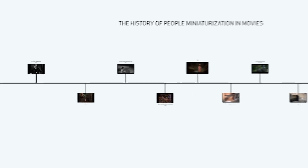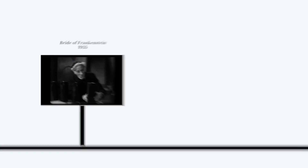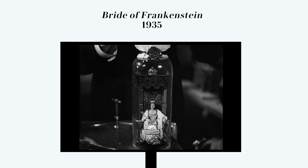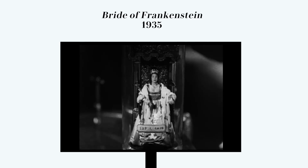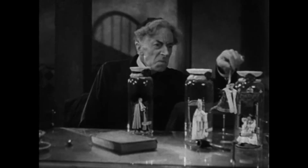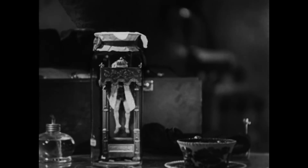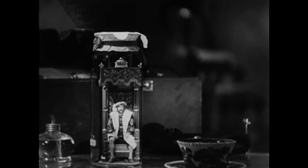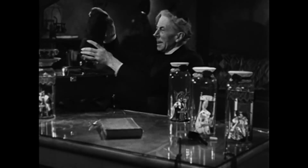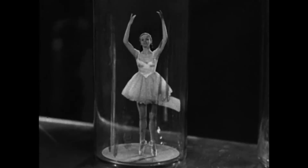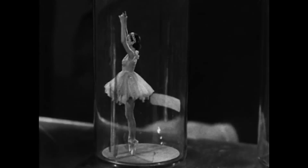One of the first primary uses of visual effects to shrink people was in the movie The Bride of Frankenstein in 1935. In order to blend the big people and the small people together, two pieces of footage had to be shot. First, there was a background plate featuring Dr. Pretorius in his lab, and then there were additional shots made of the people that would be shrunk down and placed into the jars.